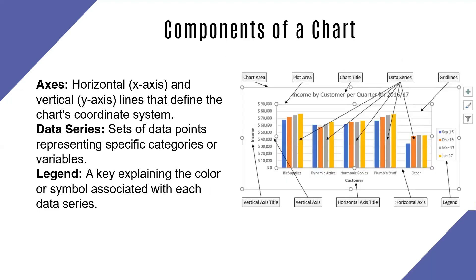Let's look at the different components of a chart. A chart has axes — the horizontal and the vertical axis. In this example, the horizontal axis represents the customer and the vertical axis represents the income. We also have the data series: for the first customer we have three entries, and four entries for others. These are the data series represented using bars, and notice that each data series has a different color that is identified in the legends.